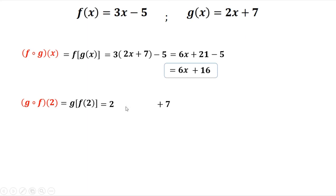From 3x - 5, but x is 2. Substituting: 3 times 2 is 6 minus 5, plus 7. Then 2 times (6 - 5) is 1 plus 7, so that's 9.